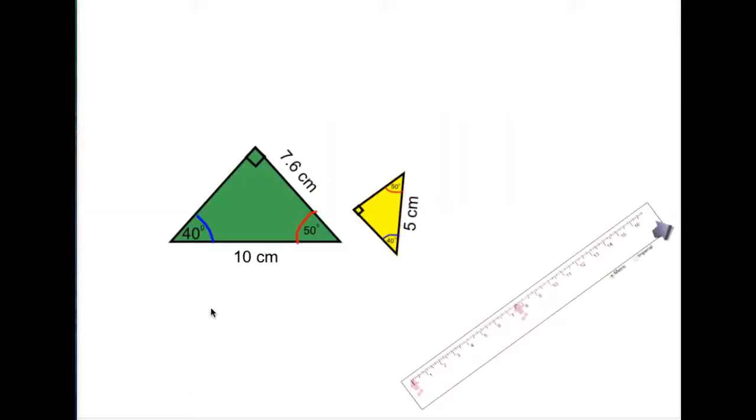This is the case when we know all three angles in a triangle. I'm going to start with this green triangle here. You can see it has a 90 degree angle, a 40 degree angle, and a 50 degree angle. In fact, if I know two angles in the triangle, I know what the third one is as well.